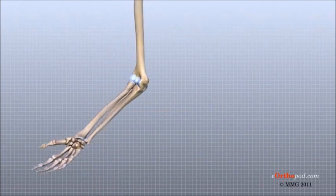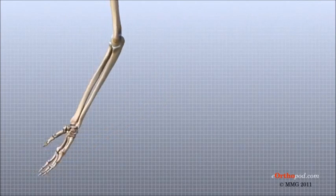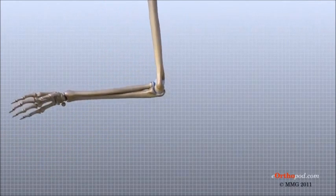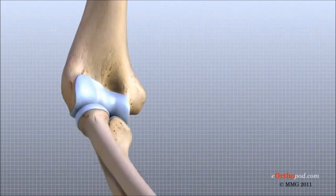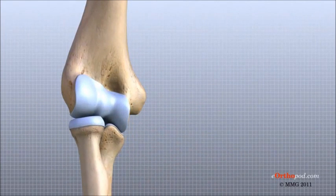This joint is complicated because the radius has to rotate as you turn your hand palm up and palm down, while at the same time it has to slide against the end of the humerus as the elbow bends and straightens.